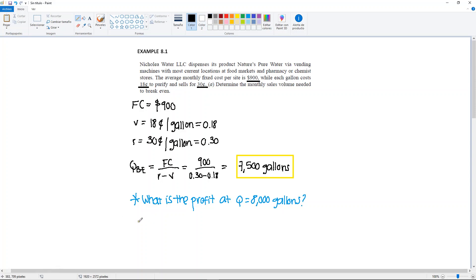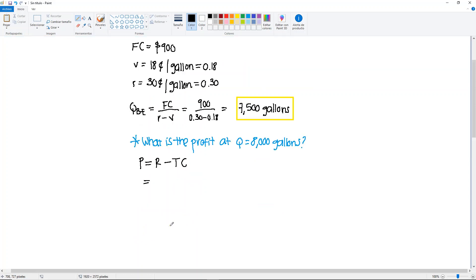We have profit equals to revenues minus total cost. So in our case, we would have RQ minus, we have fixed cost, plus variable cost per unit times the number of units, or VQ. And now we can plug in our values.